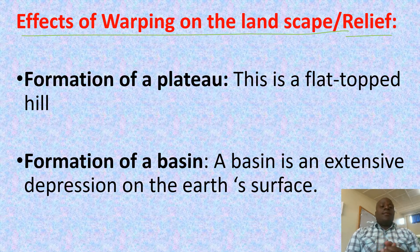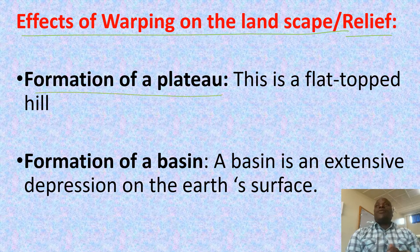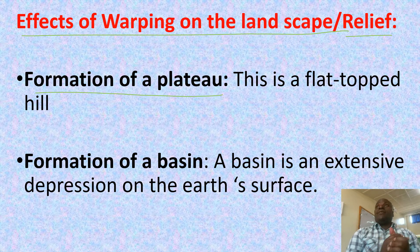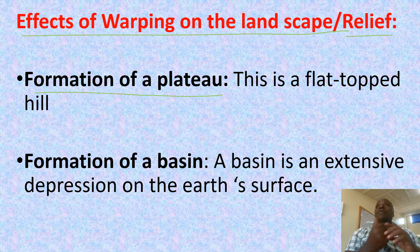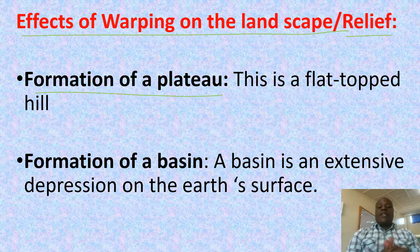Number one: formation of a plateau. A plateau is a flat-topped hill. If there is warping, a flat-topped hill may end up being formed, which we have called a plateau.